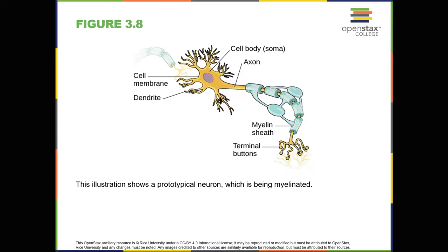Neurons, on the other hand, serve as interconnected information processors that are essential for all of the tasks of the nervous system. This section briefly describes the structure and function of neurons.